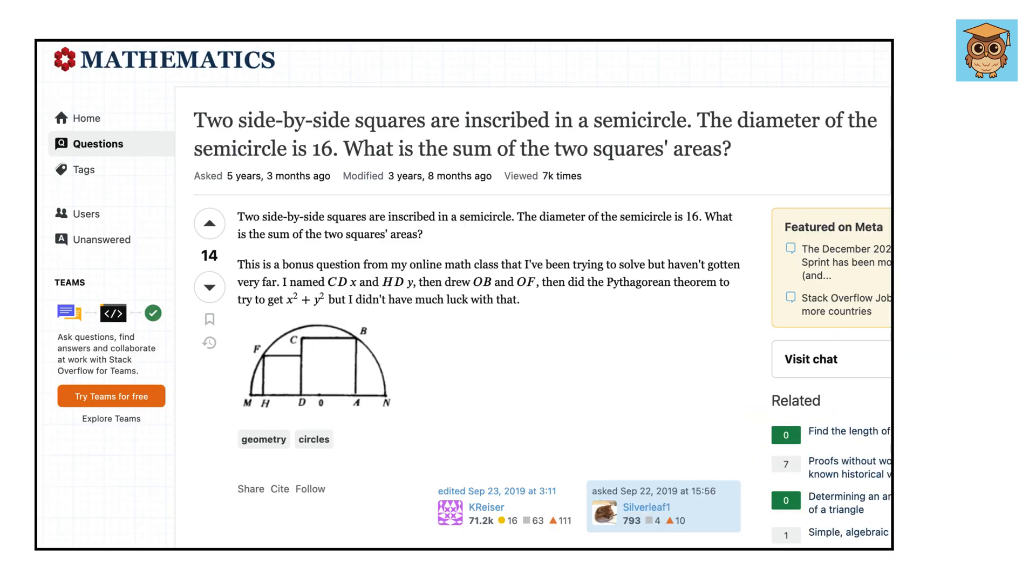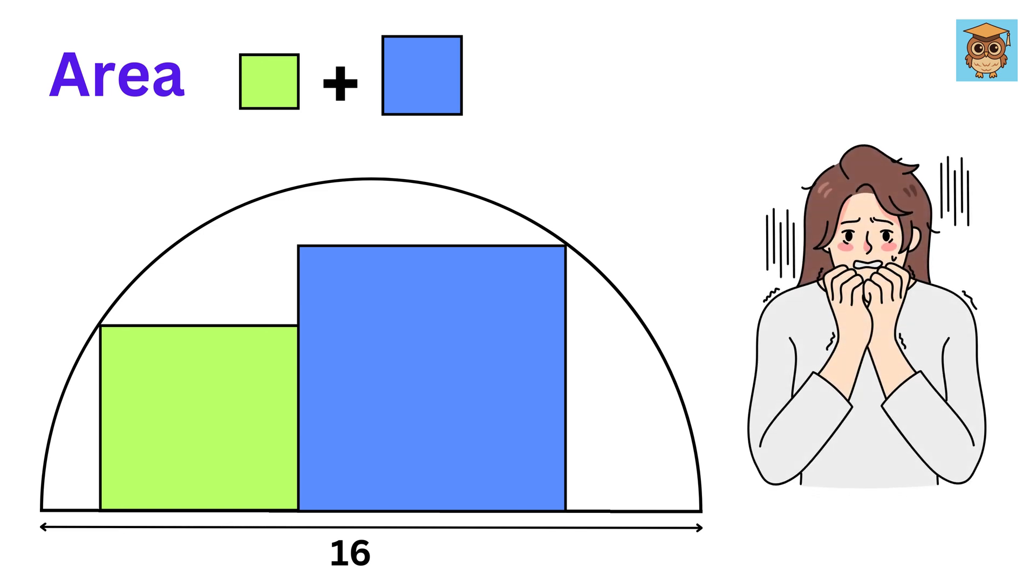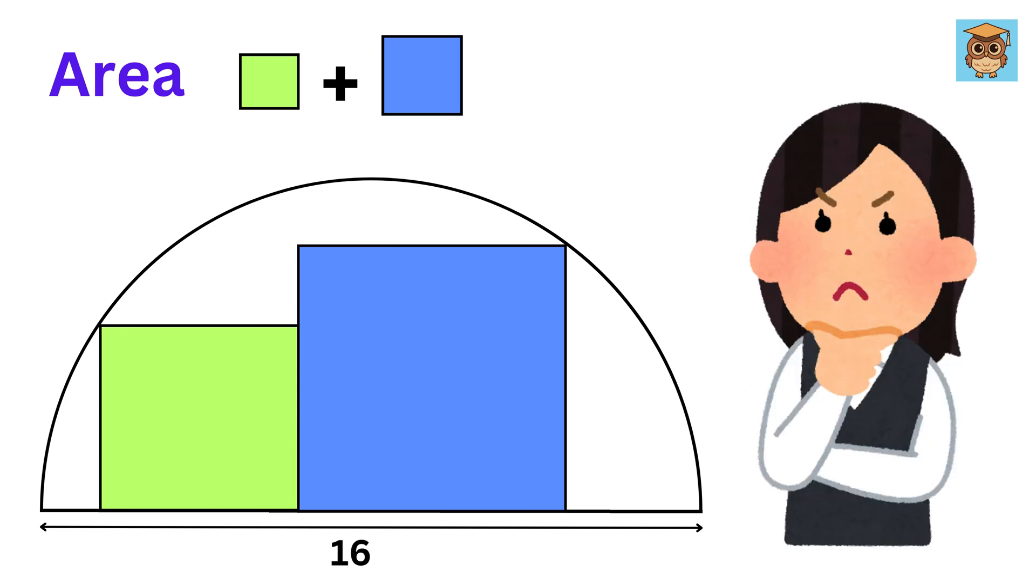This question is taken from MathStackExchange, so a huge shout out to them for this fantastic problem. Now, at first glance, this seems impossible, right? How can we figure out the area without knowing the precise location of the squares? But don't worry.